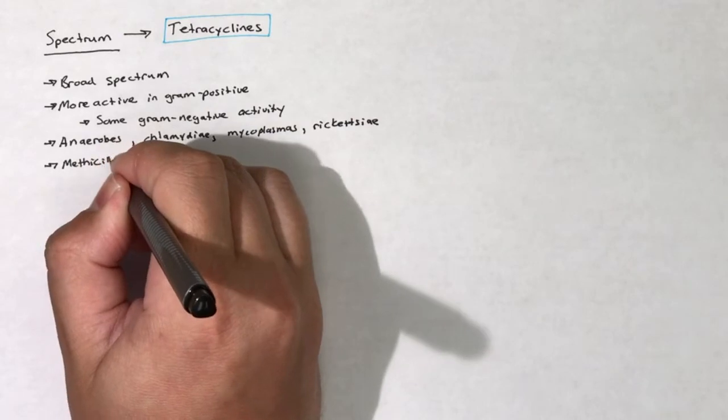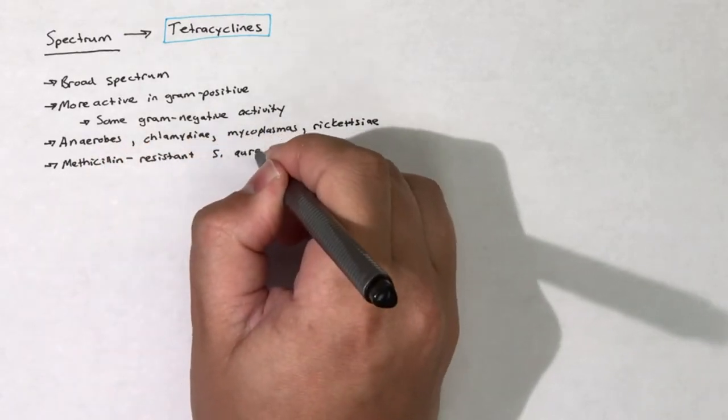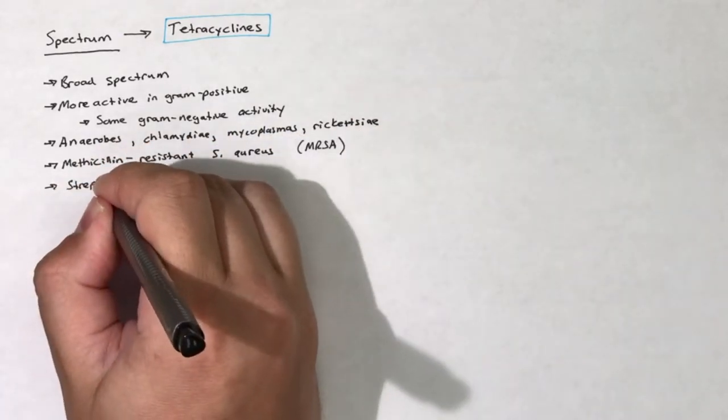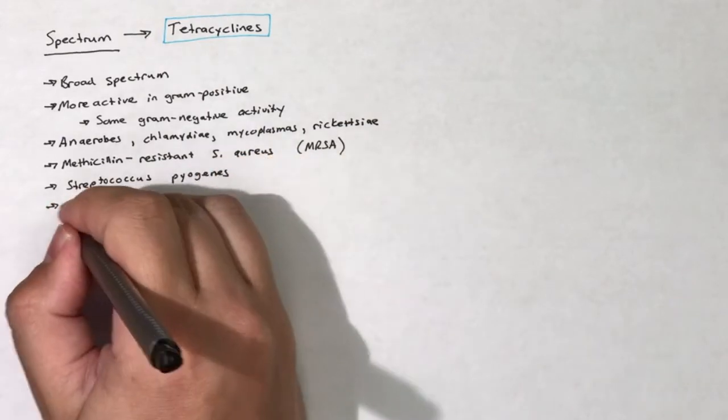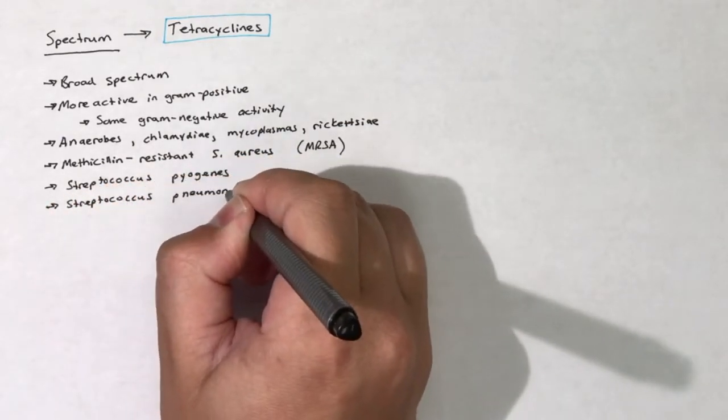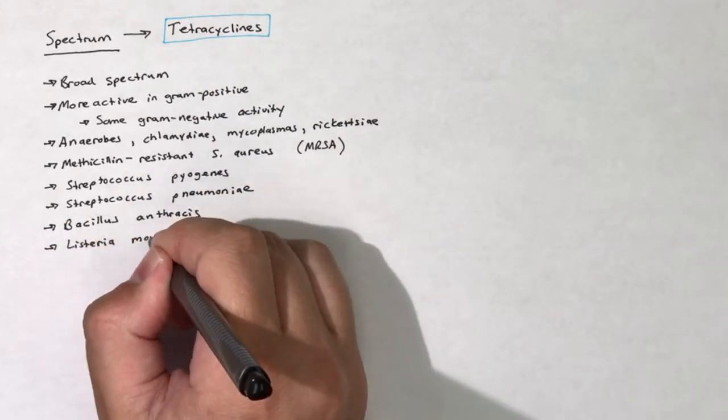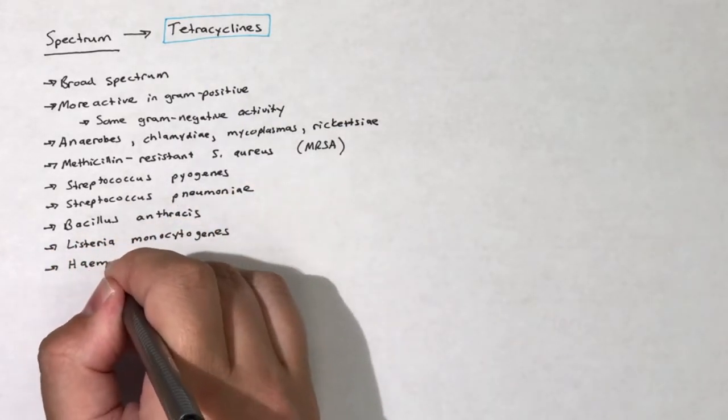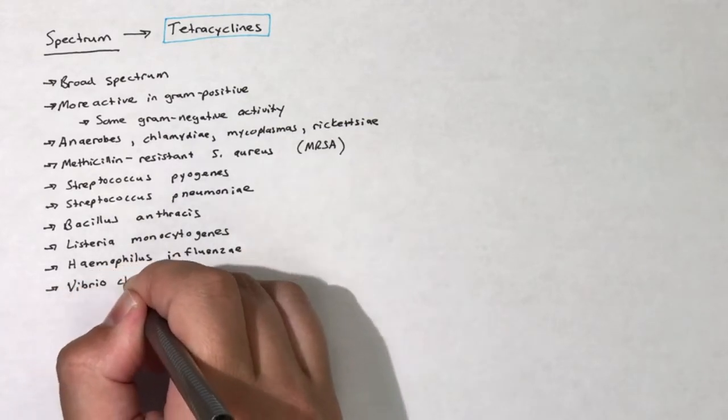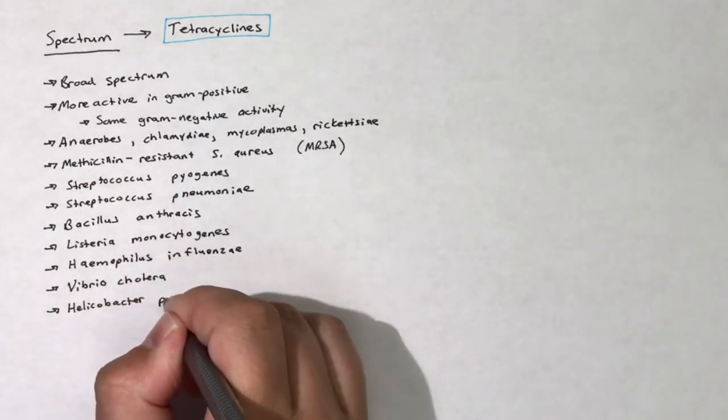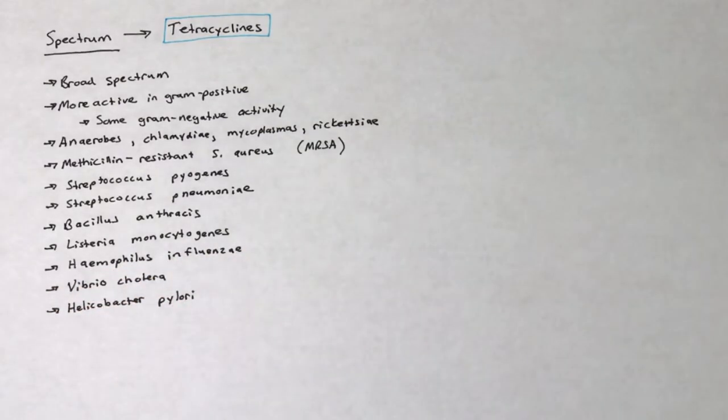Here are some highlights of some of the many microorganisms that are susceptible to tetracyclines. Tetracyclines are active against methicillin-resistant S. aureus or MRSA, Streptococcus pyogenes, Streptococcus pneumoniae, Bacillus anthracis, Listeria monocytogenes, Haemophilus influenzae, Vibrio cholerae, and Helicobacter pylori.